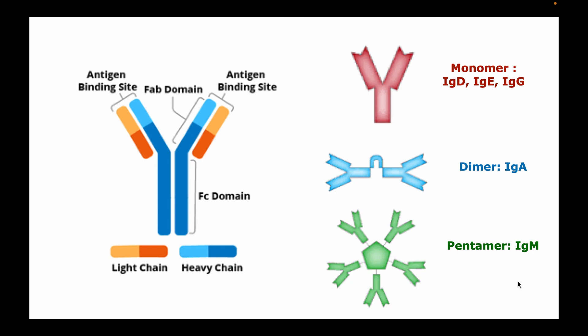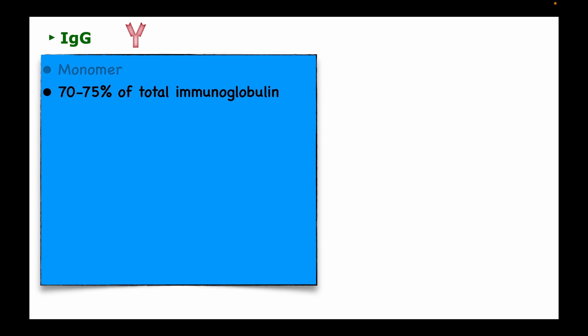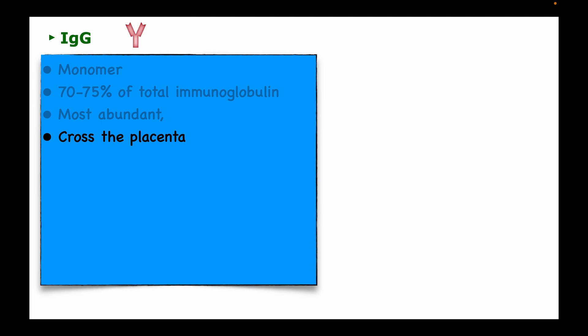Immunoglobulin G is a monomer and is the most abundant antibody isotype in the blood and plasma, accounting for about 70 to 75 percent of human immunoglobulins. Immunoglobulin G is the only immunoglobulin that can cross the placenta to transfer transient immunity to the fetus during the neonatal period, protecting the infant until it starts to make its own immunoglobulins at about three months of age.